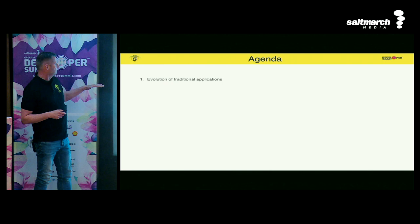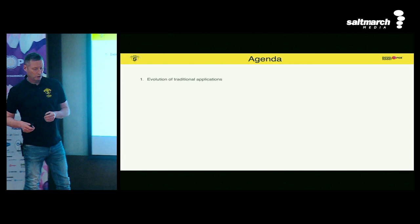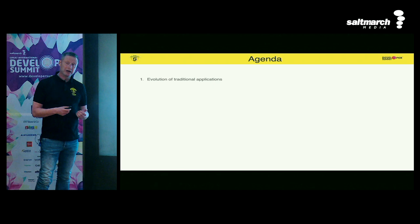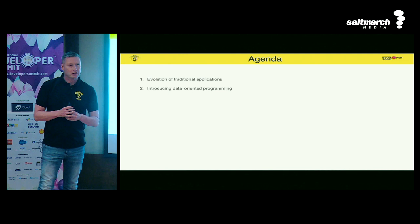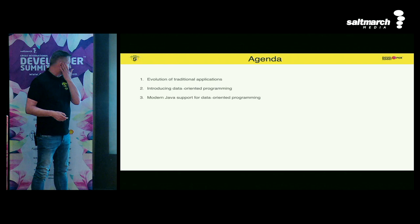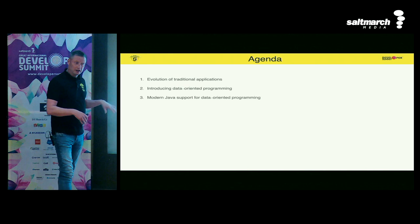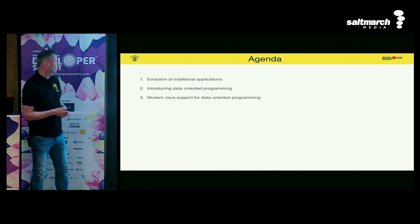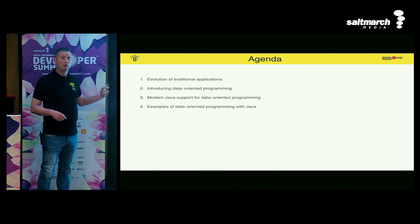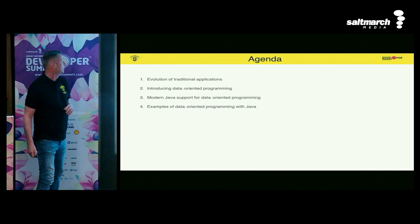What's the agenda for today? First, the evolution of traditional applications, because that's what we all come from — we write normal object-oriented code, and maybe that should change, or partially change. Then we'll do a little dive into what data-oriented programming is. After that, we'll look at how modern Java supports these things, and finally, we'll look at real-world code examples of how to apply these data-oriented patterns to Java.